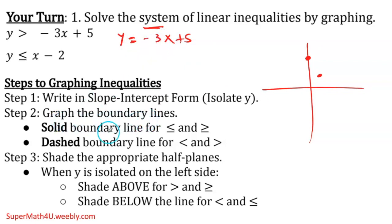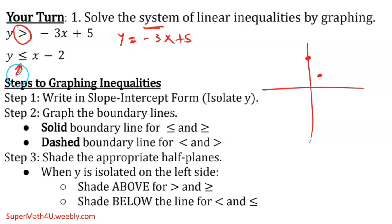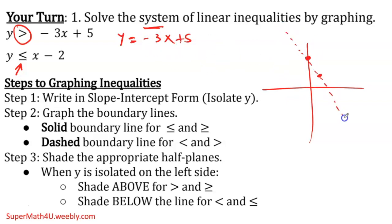Graph the boundary lines solid if the inequality symbol is less than or equal to — it has an equal underneath. So if my inequality symbol has an equal underneath, which is the second inequality, my line will be a solid line. In my case, because there's no equal underneath, it's going to be a dashed line.